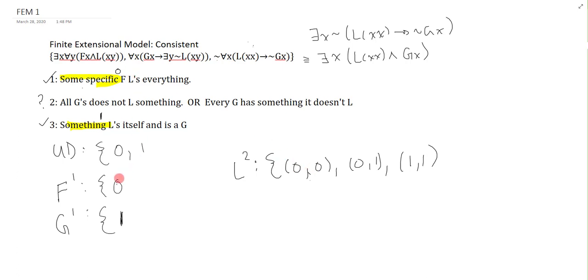Premise 1 or sentence 1 is still true. Some specific F 0 L's everything. Sentence 3 is true. Something 1 L's itself and is a G. Perfect. And sentence 2 says all G's does not L something. Well that's really good because right now my G which is 1 doesn't stand in the L relation to 0 because this doesn't appear. This isn't here so that's good. I have made this true. And now that I've made all the sentences true I just close all the set brackets and I'm done.